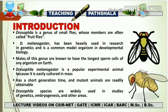First of all, we are going to see some basic details about Drosophila. Commonly we call it the fruit fly, and Drosophila melanogaster has been used in research in genetics and is a very common model organism in developmental biology. The males of this genus are known to have the longest sperm cells of any organism on earth.